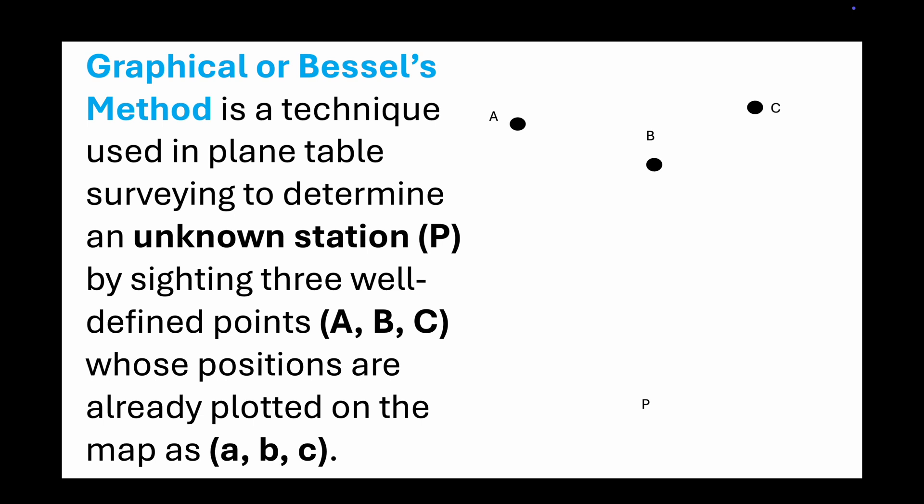Graphical or Bessel's Method is a technique used in plane table surveying to determine an unknown station P by sighting three well-defined points represented by capital letters A, B, and C on the ground, whose positions are already plotted on the map as lowercase a, b, and c.